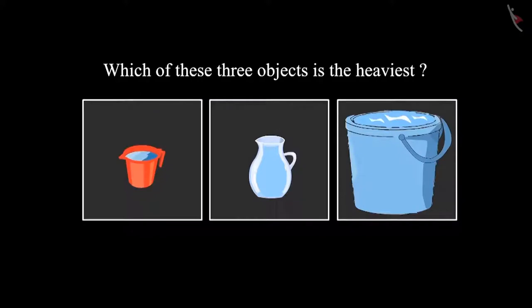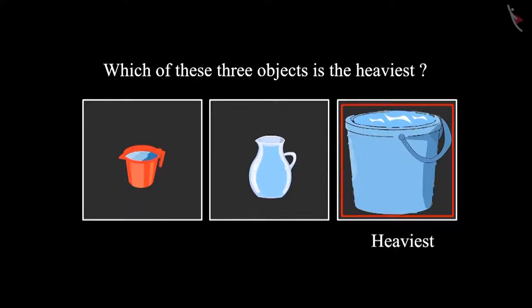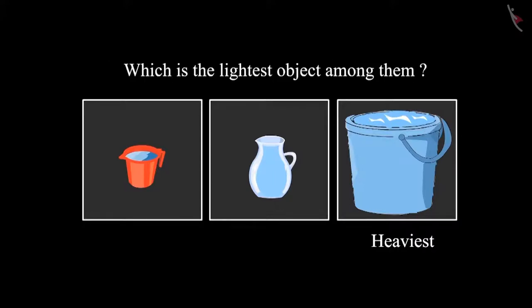So children, can you tell me which is the heaviest object among these three? Yes, the bucket of water is the heaviest among these. And which is the lightest object among them? Your answer is right, children — the mug is the lightest among them.